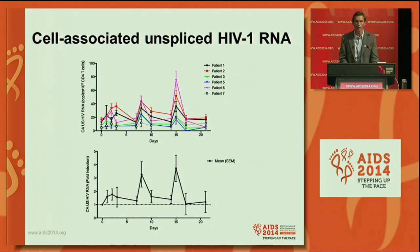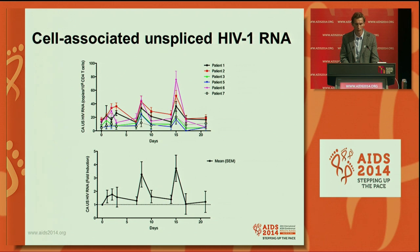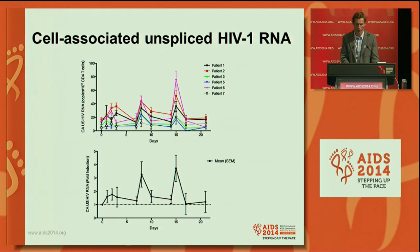We then measured cell-associated HIV RNA, which is a measure of HIV transcription within the CD4 T cells. In all six patients we observed significant increases in this parameter. The most pronounced increases in cell-associated HIV RNA were after the second and third dosing, and again you see a nice cyclic pattern.